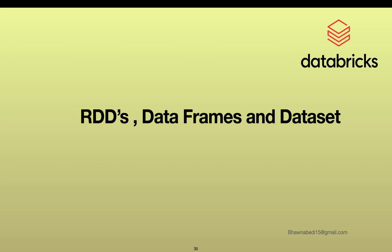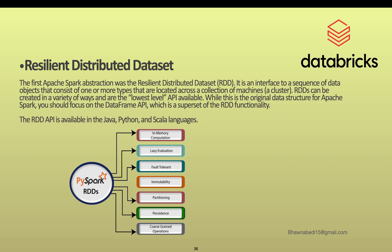When we talk about RDDs, they are called Resilient Distributed Datasets. It is the first form of data structure that Spark uses. If you talk about any other programming language like Python, lists are a certain type of data structure used inside Python. Similarly, when you talk about Spark, RDDs are one of those data structures.